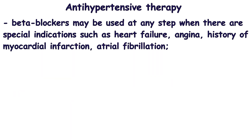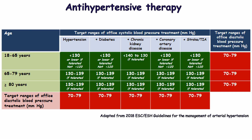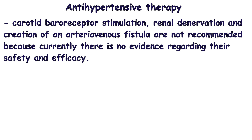Beta blockers may be used at any step when there are special indications such as heart failure, angina, history of myocardial infarction, or atrial fibrillation. The first objective of treatment should be to lower blood pressure to less than 140/90 mmHg in all patients who tolerate this, with a main target of 130/80 mmHg or lower for most patients. Diastolic blood pressure target is 80 mmHg or less, and systolic blood pressure should not be lowered below 120 mmHg. Carotid baroreceptor stimulation, renal denervation, and creation of an arteriovenous fistula are not recommended due to insufficient evidence regarding their safety and efficacy.